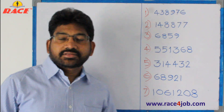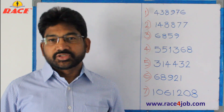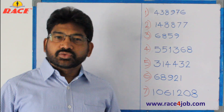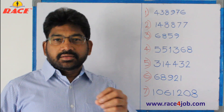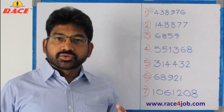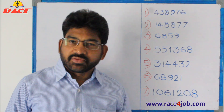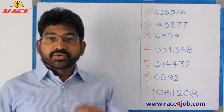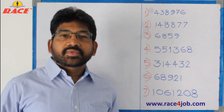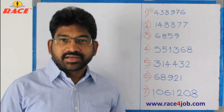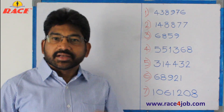In some competitive examinations, like bank PO, clerk, staff selection commission, railways, insurance — in these competitive examinations, in some questions you need to find out the cube root of a number. Generally a 5 or 6 digit number is given and you need to find out the cube root of that number. There is a very simple method to find out the cube root of a number. Let us see that one today — how to find out the cube root of a number.